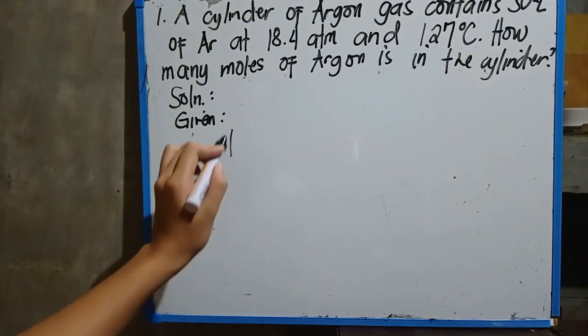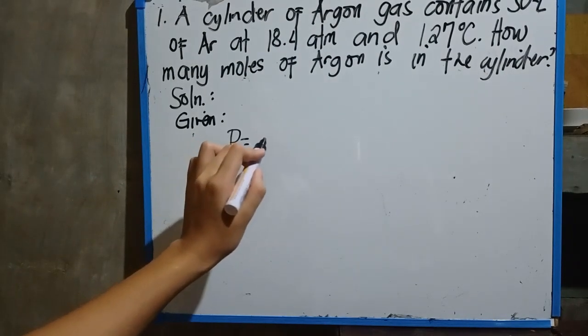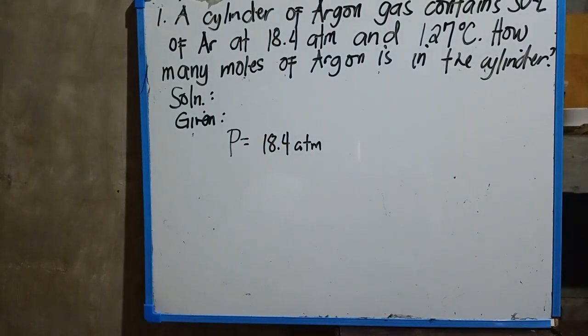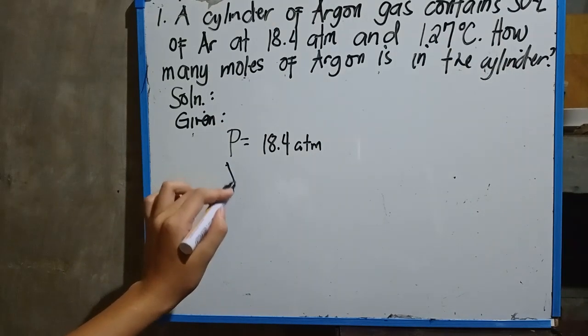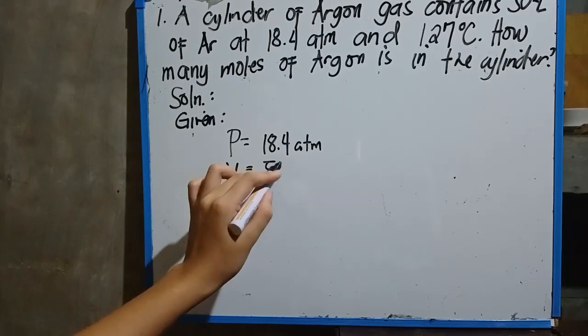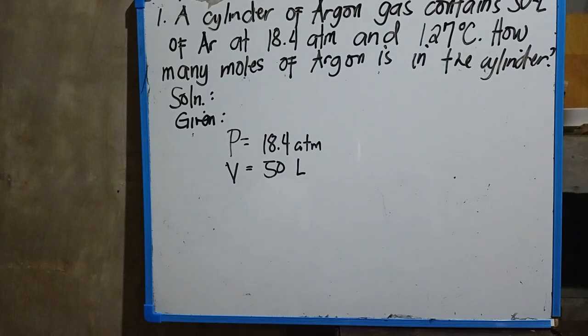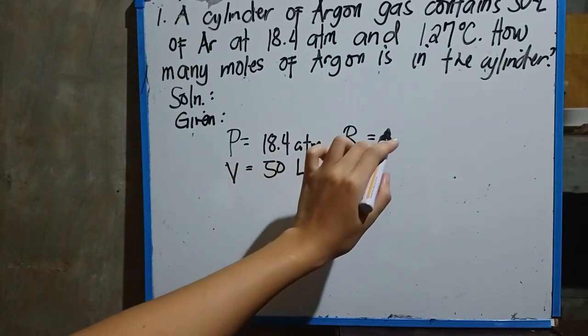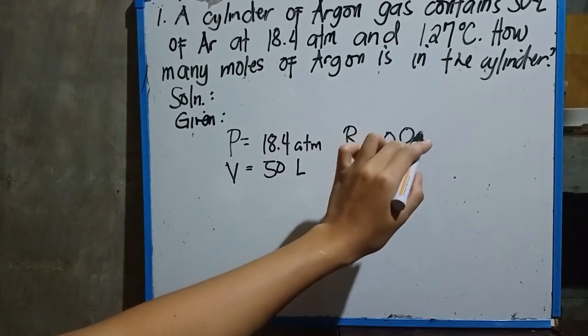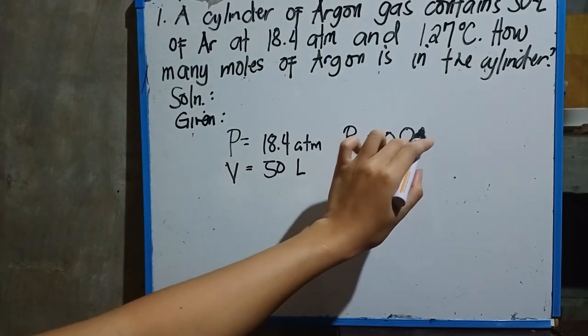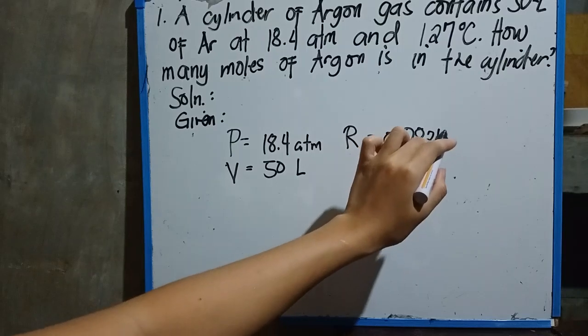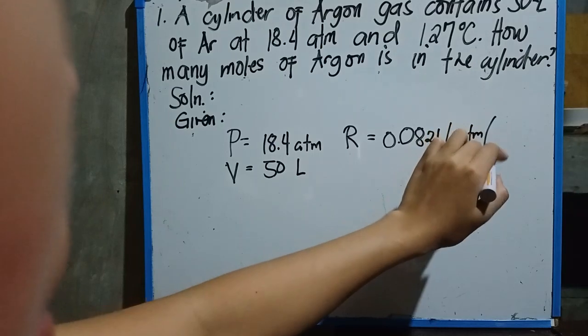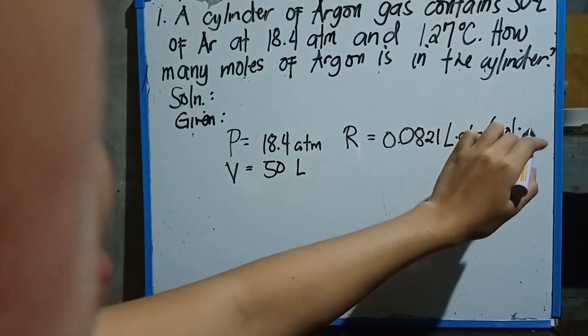So our pressure is 18.4 atm. We have also our volume which is 50 liter, and our R which is constant which is equivalent to 0.0821 liter·atm per mole·kelvin.